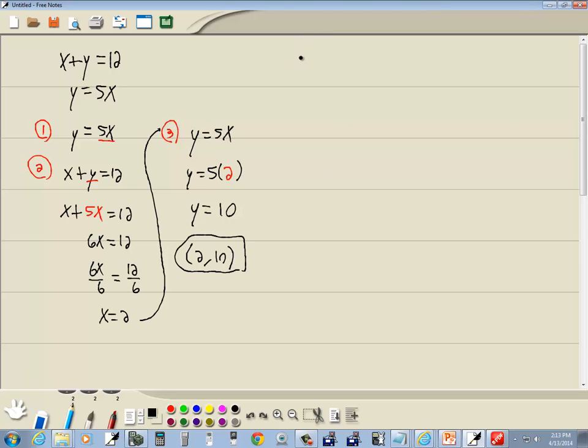Now to do this on the calculator, we need to rearrange. Take the 5x and move it to the left side, becoming negative 5x plus y equals 0. All variable terms must be on one side and constant terms on the other. They must be lined up: x's in the same column, y's in the same column, and numbers on the other side.